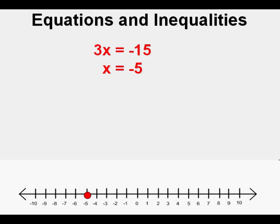Let's do a similar problem but make it an inequality by changing the equal sign to a greater than symbol. So we have 3x is greater than negative 15. The process of solving is very much the same as for an equation — we divide both sides of the inequality by 3 and bring down the answer with the symbol.